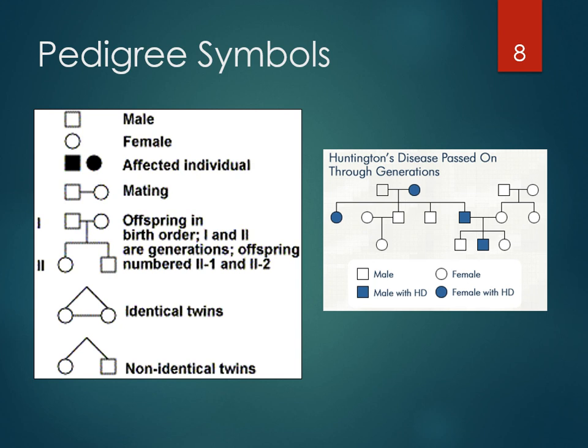How to read a pedigree: a square means male, a circle means female. If it's colored in, it carries or has the trait you're discussing. A line between two people means they mated; a line straight down from a mating shows offspring. It's drawn left to right, oldest to youngest. A triangle connecting offspring indicates identical twins; if the line is not between the two, those are non-identical twins.